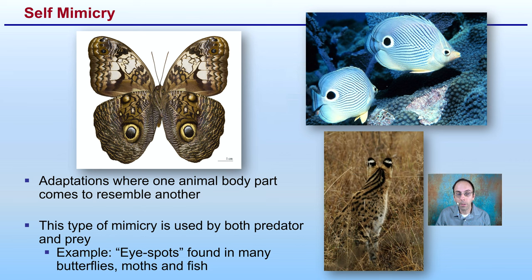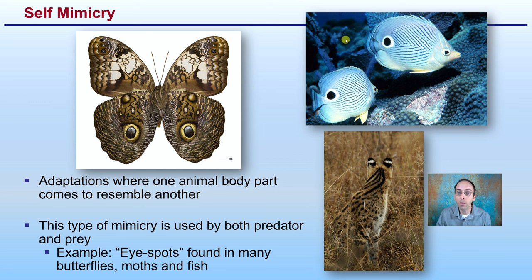Lastly, we have self-mimicry, which is adaptations where one body part of an animal comes to resemble another. This type of mimicry is used by both predator and prey. Eye spots found in many butterflies, moths, fish, and other animals are a key example. For fish, the predator typically aims for the eyes, so with the eye spot located toward the back, the predator will naturally aim there — which will just be water — allowing the fish to escape. This gives you a background on some plant and animal defenses.